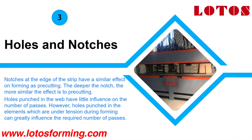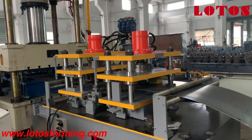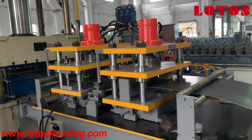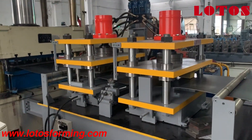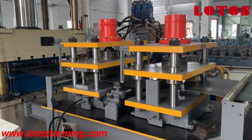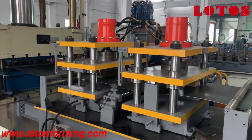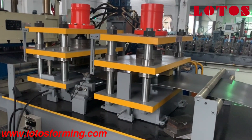Holes and notches. Notches at the edge of the strip have a similar effect on forming as pre-cutting. The deeper the notch, the more similar the effect is to pre-cutting. Holes punched in the web have little influence on the number of passes.